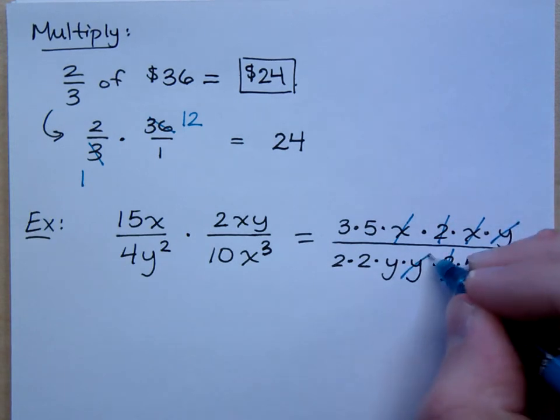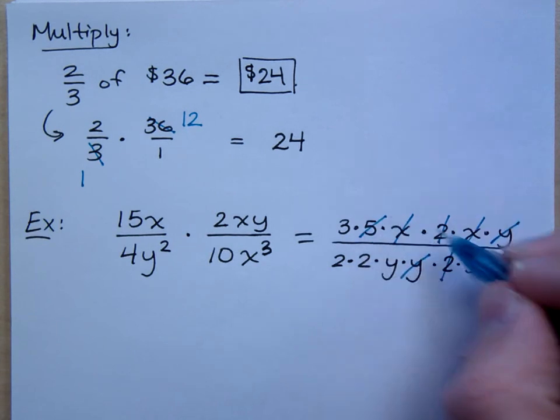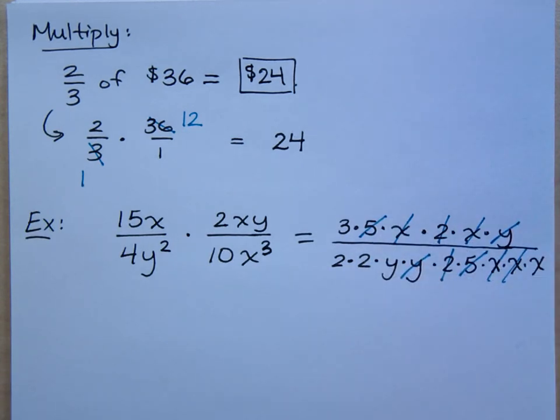The Ys can reduce. A pair of Ys. 5 over 5. Is there anything else? That should be it.